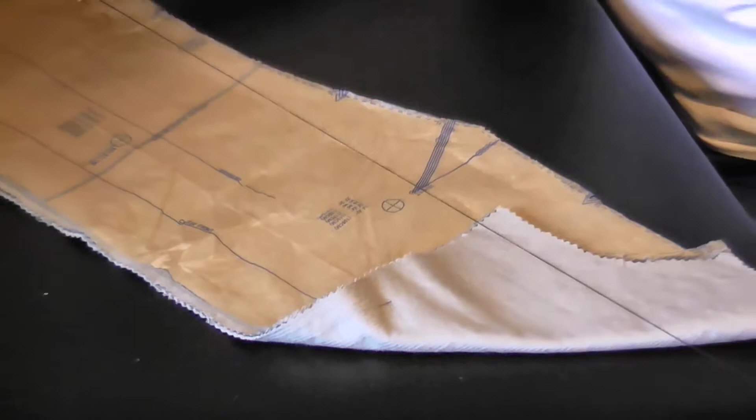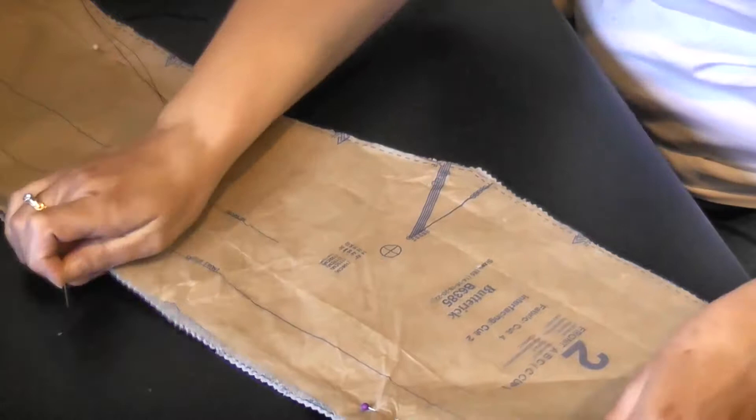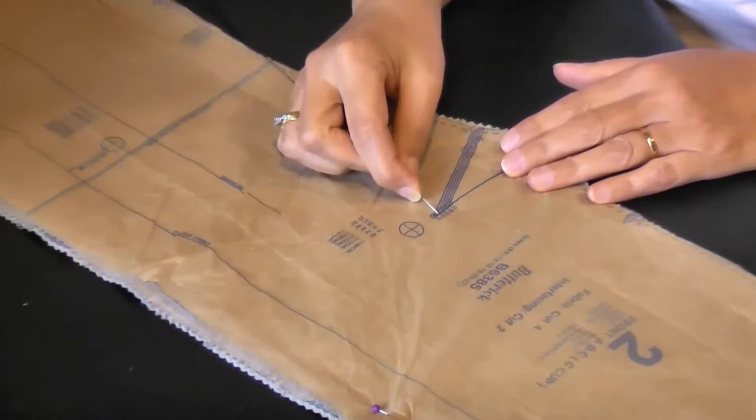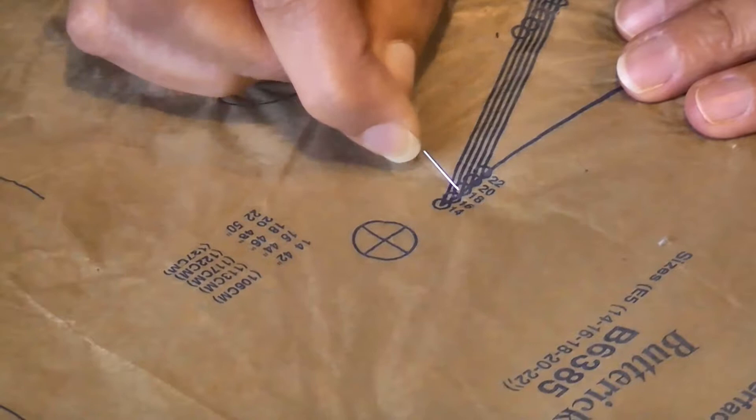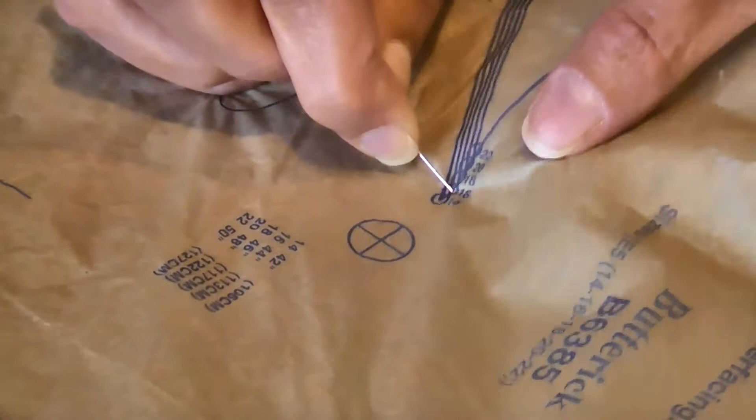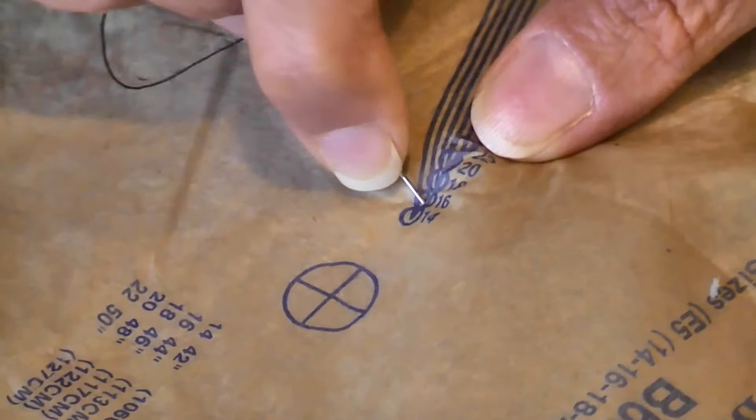I'm going to start with the apex of the dart, which is this dot here. I'm going to make sure that I put my needle into the circle that's marked on that dart at the right size. I'm doing a size 16, so I need to make sure I'm using the size 16 dot. So here it is, right here at the centre of it. I'm actually going to go through both my layers of fabric, because these are two fronts, left and right, and I need to make sure they both are mirror images of each other, so I'm doing them together.